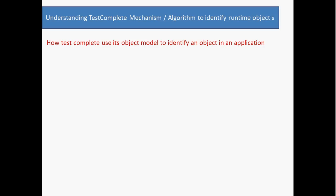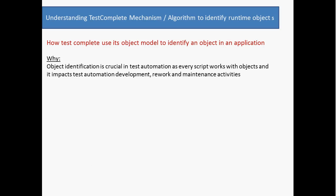TestComplete has an object model that is used to identify or work with all standard objects like text boxes, buttons, etc. By using this object model and specific properties of an object, TestComplete identifies objects during runtime. Object identification is crucial in test automation, as every script works with objects.